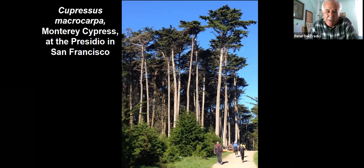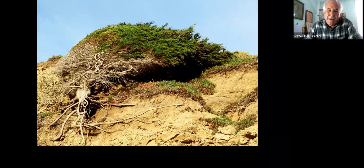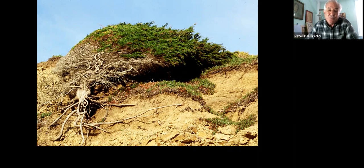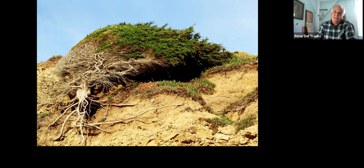Here's the Monterey Cypress — I took this picture at the Presidio in San Francisco. This is the way they grow when part of a forest under closed canopy conditions. And this is the same species, roughly the same age, growing on the headlands above the Golden Gate Bridge where the wind never stopped blowing. This is the form the tree takes when exposed to continual wind — it's called a krummholz, or twisted wood. This is totally an environmental, not a genetic response.